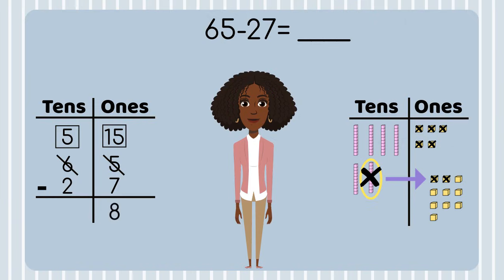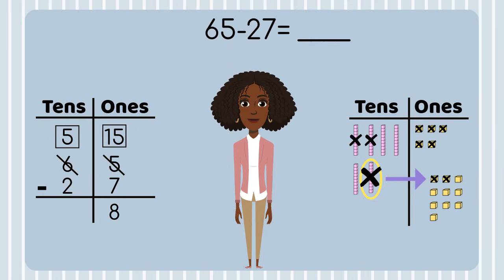Now we can subtract the tens. We have five tens — how many do we need to take away? Two. Let's count together as we take away two: one, two. How many tens do we have now? Three. Let's place a three in the tens place. What is 65 minus 27? 38.